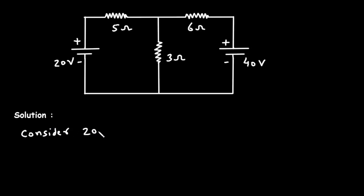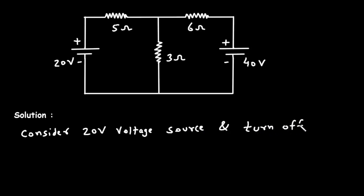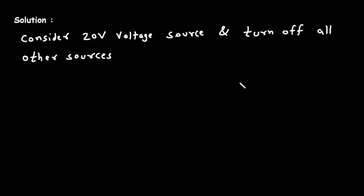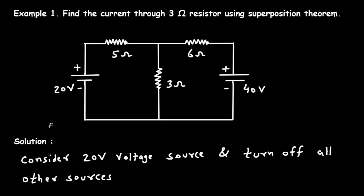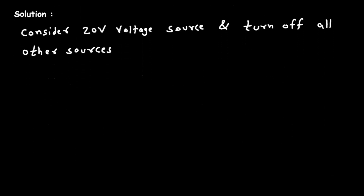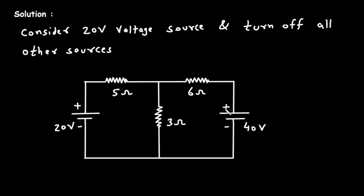Consider the 20V voltage source and turn off all other sources. This is a voltage source, so when we turn off a voltage source, we have to short circuit it. We will turn off this voltage source by replacing it with a short circuit.